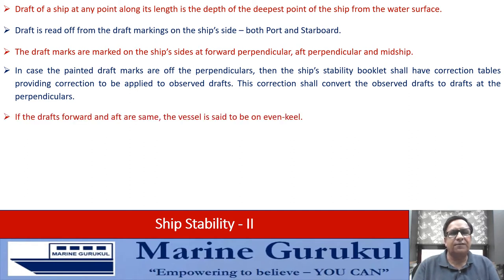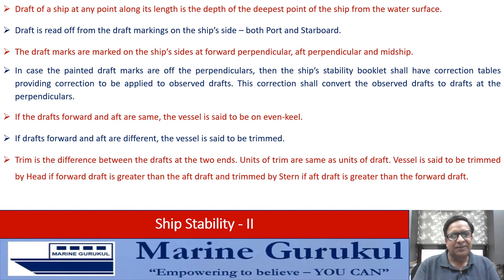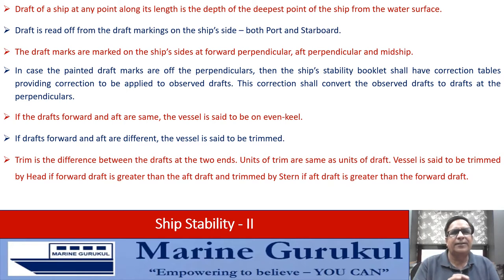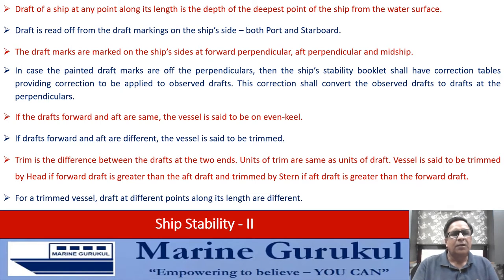If the drafts forward and aft are the same, the vessel is said to be on even keel. If the drafts forward and aft are different, the vessel is said to be trimmed. The difference between the drafts at the two ends is the trim, expressed in the same units as draft. The vessel is trimmed by head if the forward draft is greater, and trimmed by stern if the draft aft is greater than the draft forward.